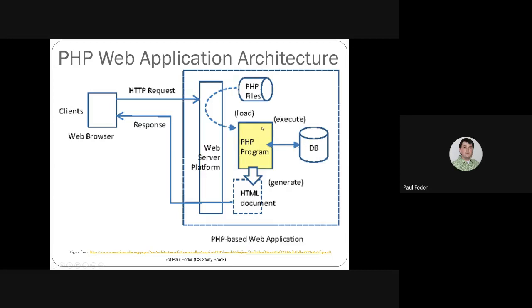While executing that PHP program, it generates an HTML document, which is sent through the web server platform back to the client. This is very straightforward — PHP is still the most used web server-side scripting language. It's a C-like language that generates HTML pages, and in some cases, as we'll see in our simple API example, it can just be a page that prints an HTML document.